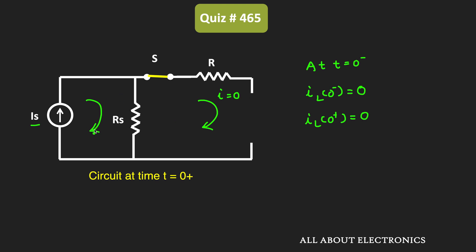And now the entire voltage which is appearing across this resistor Rs will also appear across this inductor L. The voltage drop across this resistor Rs is equal to Is times Rs, and the same will also appear across this inductor. So we can say that the voltage across the inductor at time t is equal to 0+, is equal to Is·Rs.